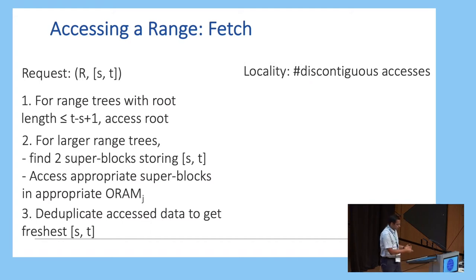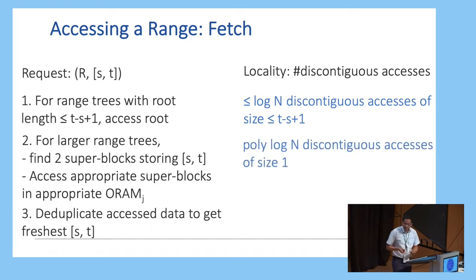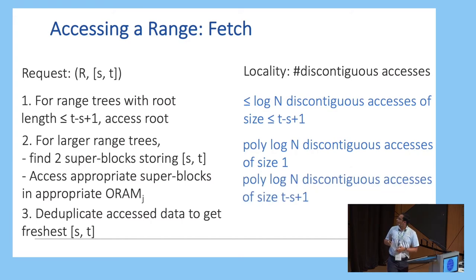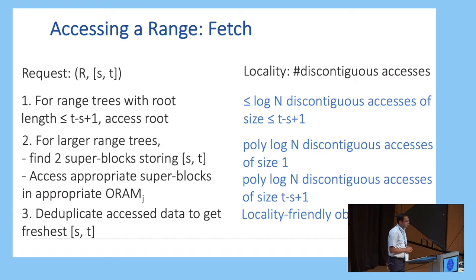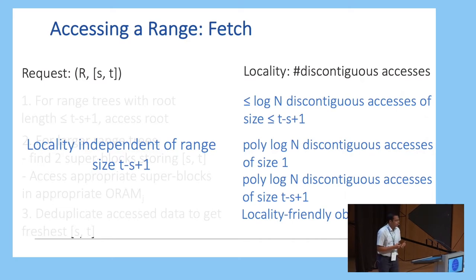Let us analyze the locality of this algorithm — remember, locality is the number of discontinuous accesses or jumps. For the first step, we make up to log N discontinuous accesses of the size of the range. For the second step, accessing the oblivious data structure makes polylogarithmic accesses, but these are of size one since we're only accessing an index. For the next step, performing the actual access again makes polylogarithmic discontinuous accesses of the size of the range. Finally, for deduplication, we use a locality-friendly oblivious sort. Observing all of these points, none of them depend on the range in terms of locality — locality is independent of the size of the range.